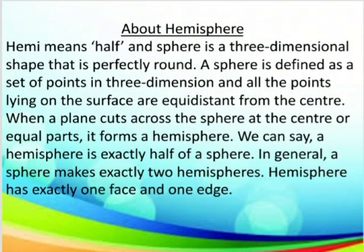First, let's learn about what is a hemisphere. Hemisphere, as we all know, is made up of two words: hemi and sphere. Hemi means half, and sphere is a three-dimensional shape that is perfectly round. A sphere is defined as a set of points in three dimensions where all the points lying on the surface are equidistant from the center. When a plane cuts across the sphere at the center into equal parts, it forms a hemisphere. We can say that a hemisphere is exactly half of a sphere. In general, a sphere makes exactly two hemispheres. A hemisphere has exactly one face and one edge.